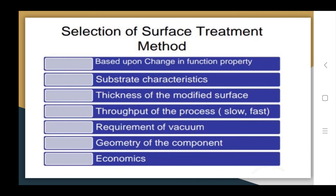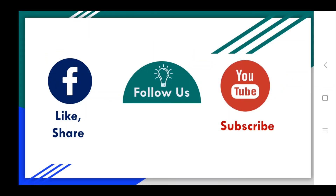To select the appropriate surface treatment method, several parameters must be considered: the required change in functional property, substrate characteristics, thickness of the modified surface, process throughput (slow or fast), vacuum requirements, geometry of the component, and economics. This concludes the introduction to coating technology. The next lecture will cover CVD, PVD, and thermal spraying methods in detail.